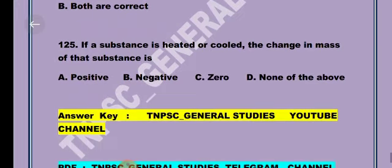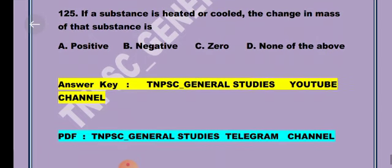Question 25, last question. If a substance is heated or cooled, the change in mass of the substance is Option A positive, Option B negative, Option C zero, or D none of the above. The answer is in the comment box. Okay, thank you for watching, see you next time.